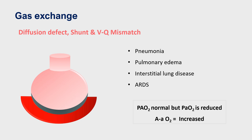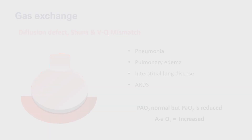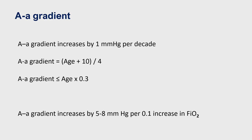In broad terms, the alveolar-arterial gradient helps us identify the step where oxygenation may get impaired. It is also important to remember that this gradient tends to increase with aging, probably related to a reduction in the diffusion surface as one ages. Roughly, the gradient increases by 1 mmHg with every 10 years of age.